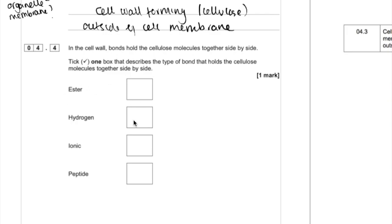So the answer is hydrogen. But if you didn't know that, hopefully you could go through a process of elimination, knowing that ester bonds are in lipids, so it's not that. Ionic bonds, they can be found in the tertiary structure of proteins. And peptide bonds, they join up amino acids.